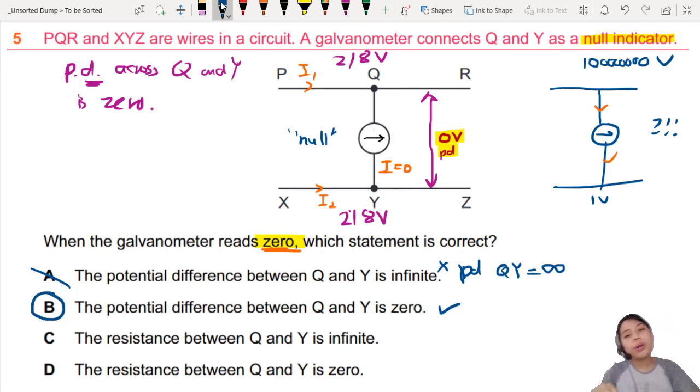C. The resistance between Q and Y is infinite. Why would there be resistance between Q and Y? Galvanometers are designed to have very low resistance. It's very similar to an ammeter. Ammeter galvanometer should have low resistance. So low R. Voltmeter is the one that has a very high resistance. So I don't know why would you have an infinite resistance.